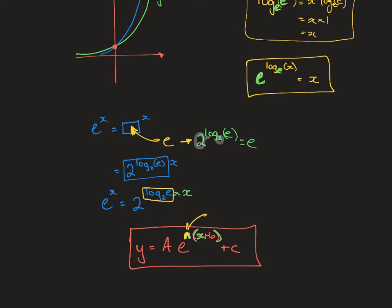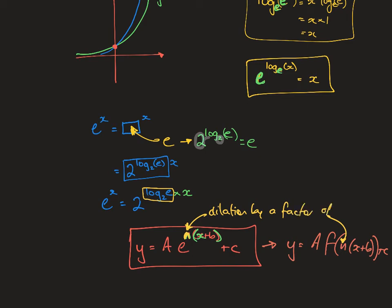What does that n do in that generic formula y equals a·f(nx + b) + c? It dilates by a factor of 1 over n from the y-axis. Because it's changing x — x is across, and across means from the y-axis — so it's dilation by a factor of 1 on n from the y-axis.